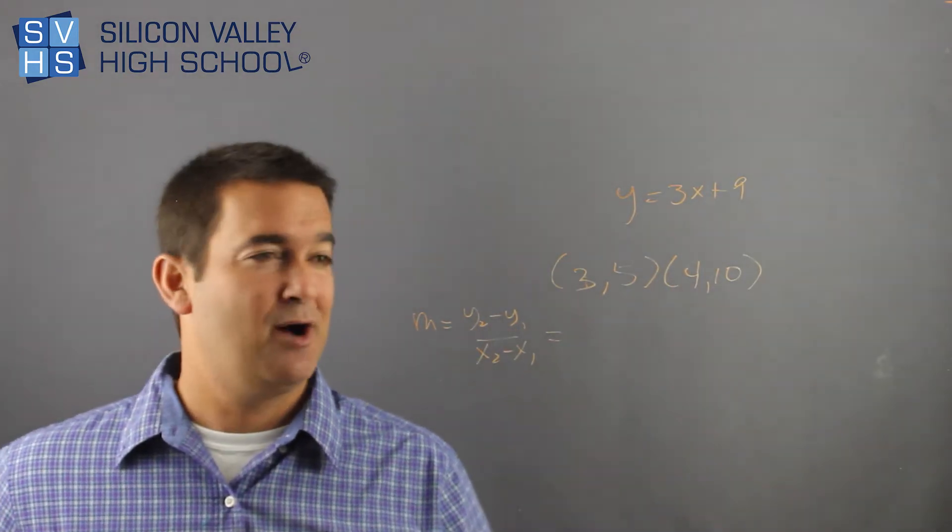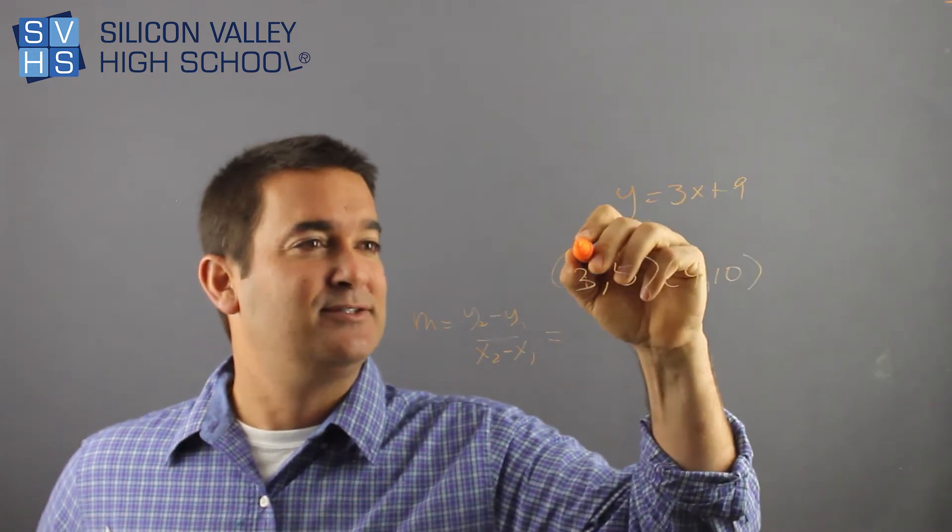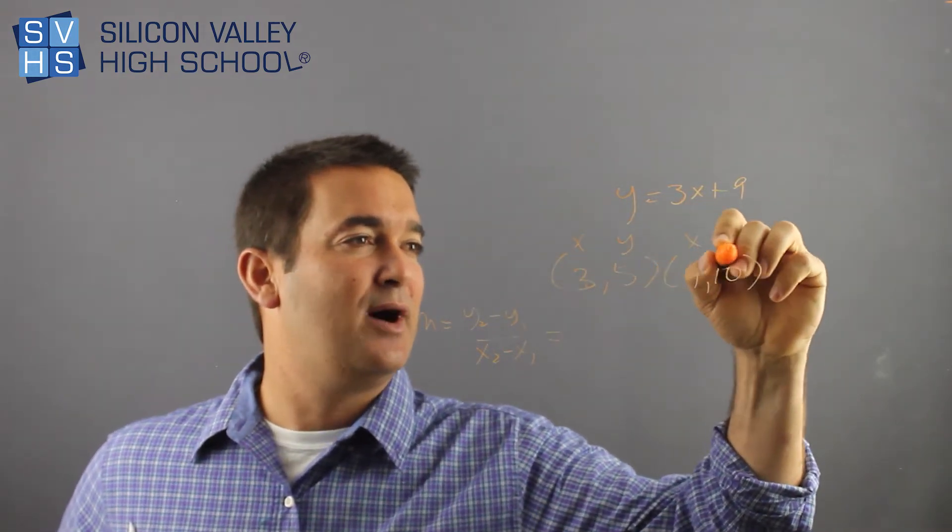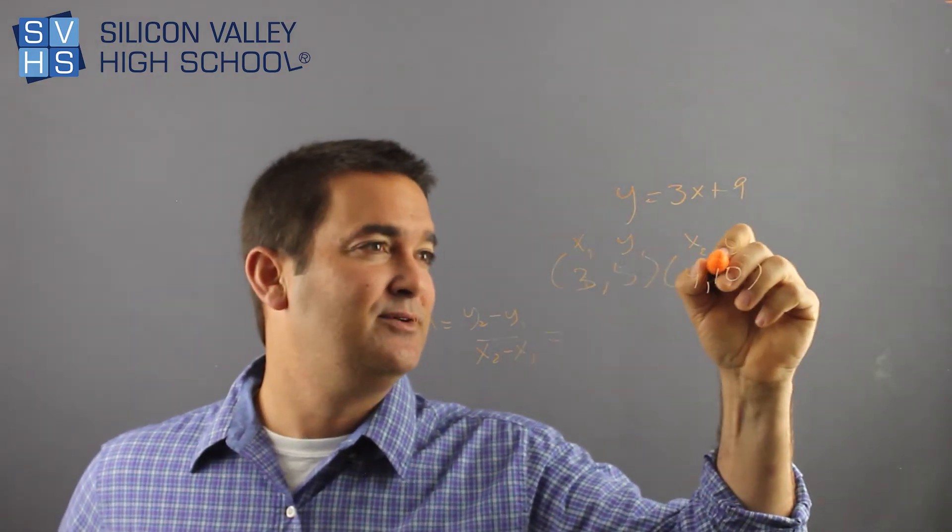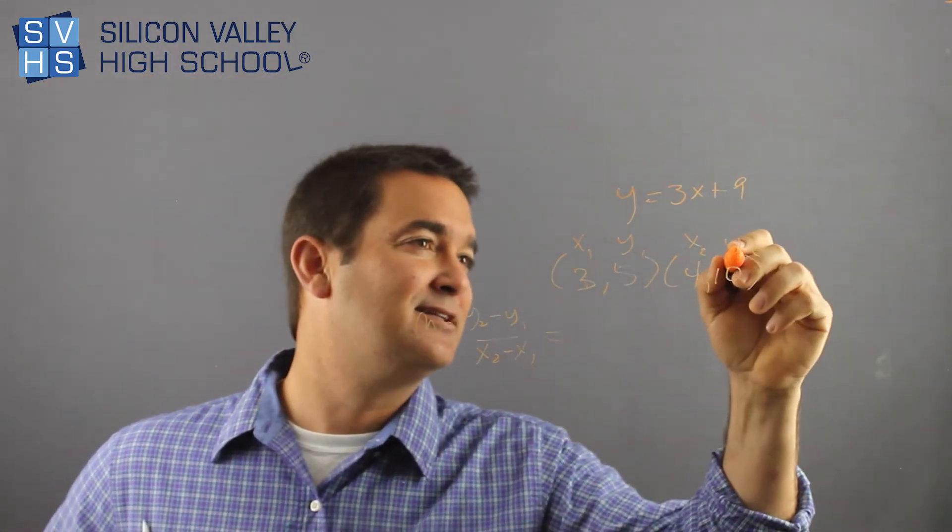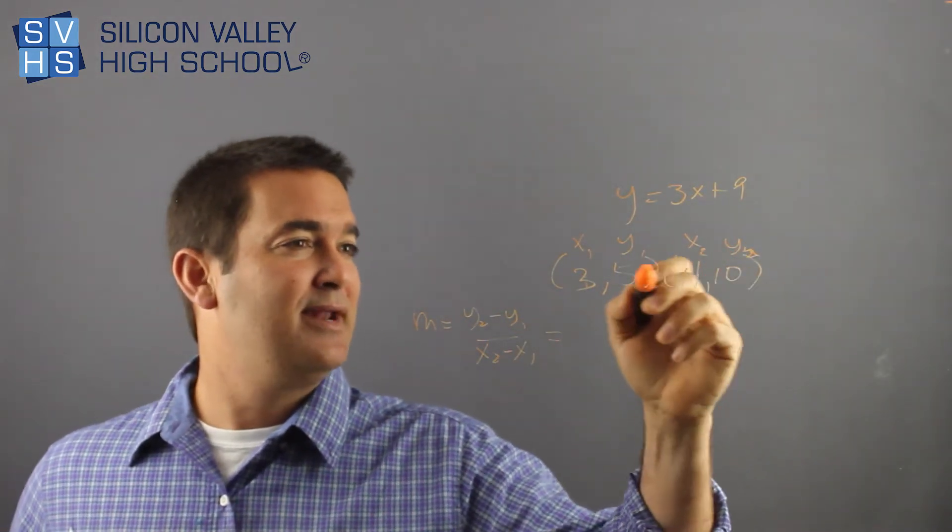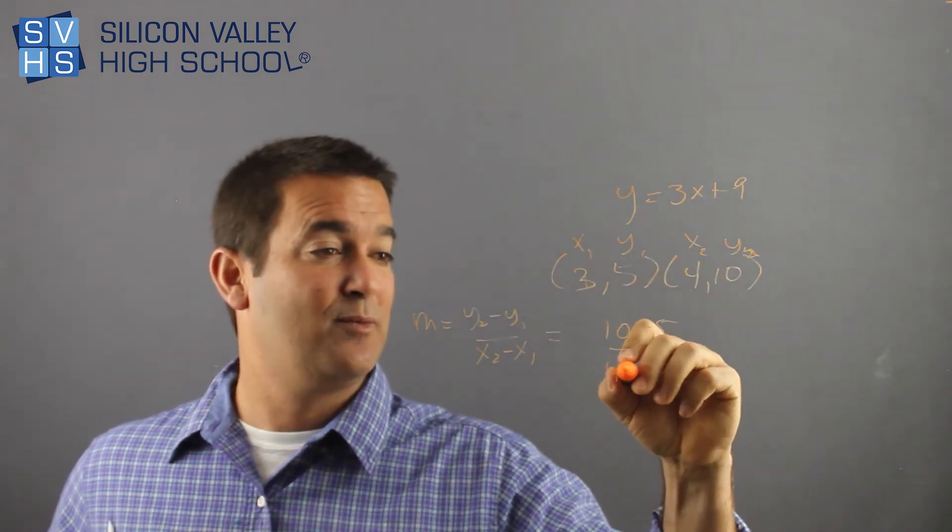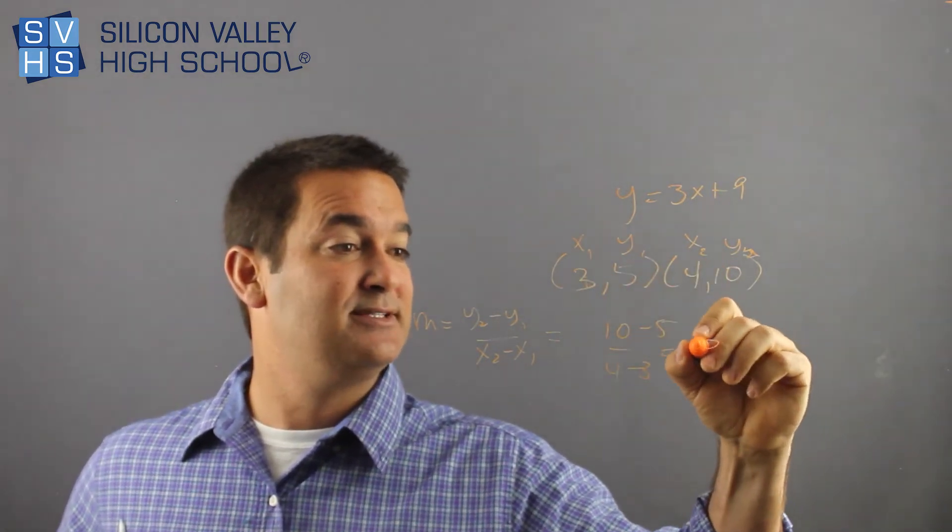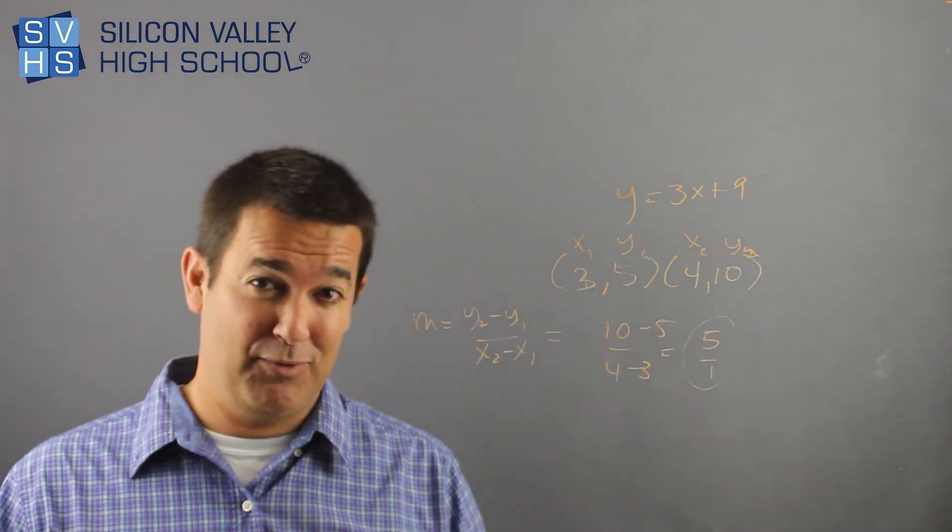What's this whole y₂, y₁ drama? Remember, this is your first point, second point, order doesn't really matter. So if this is x, y, and this is x, y, which it is, you could call this 1 and 1 because it's your first point. How about 2 and 2 because it's your second point? So y₂ minus y₁. This y minus this y, 10 - 5 over this x minus this x, 4 - 3. Your slope is 5 over 1. That's how you find slope given two points.